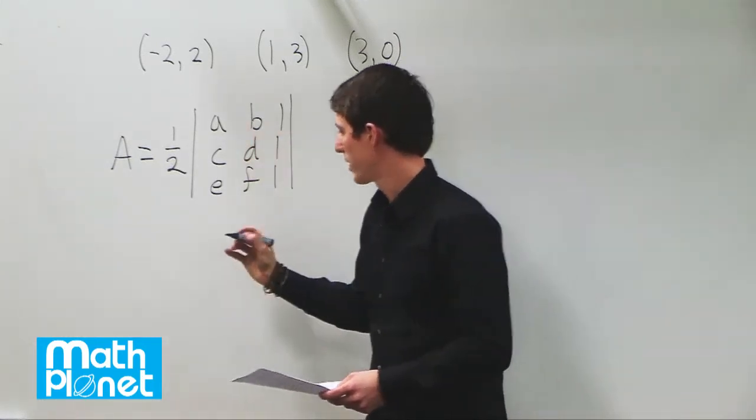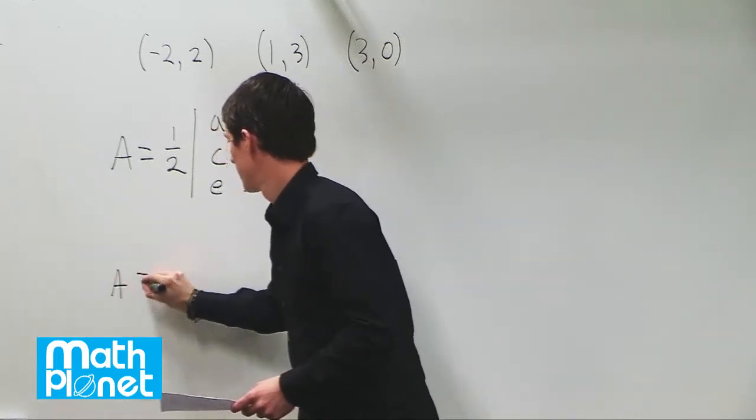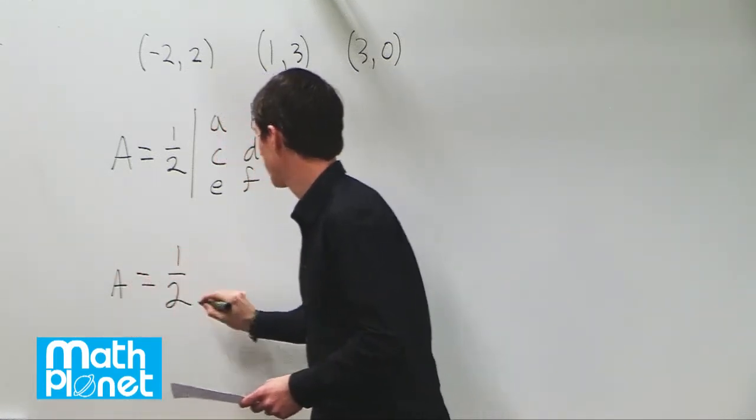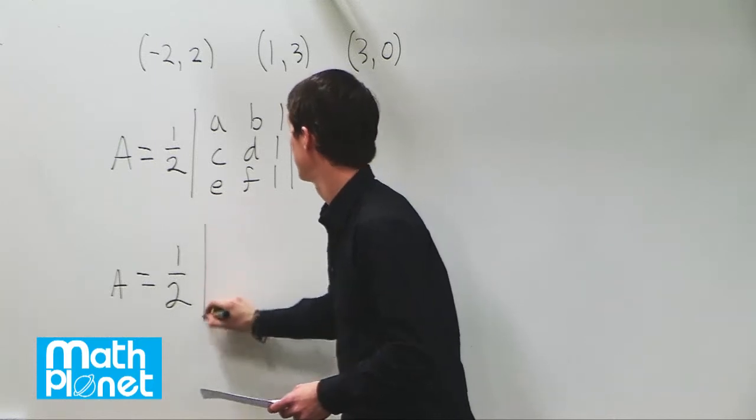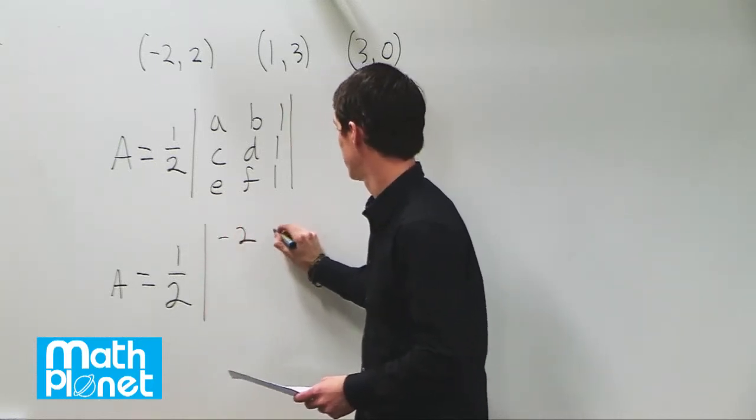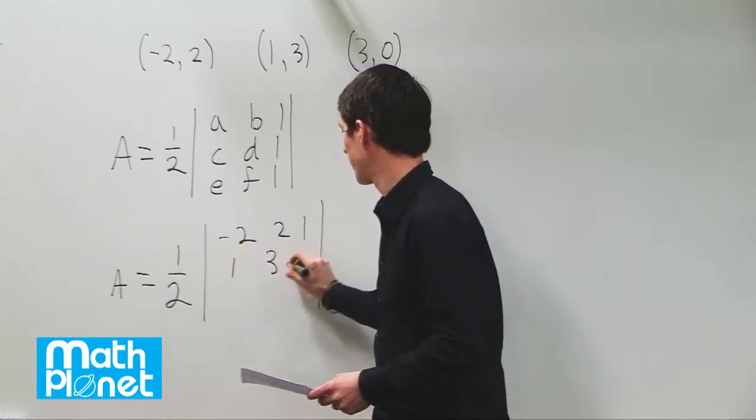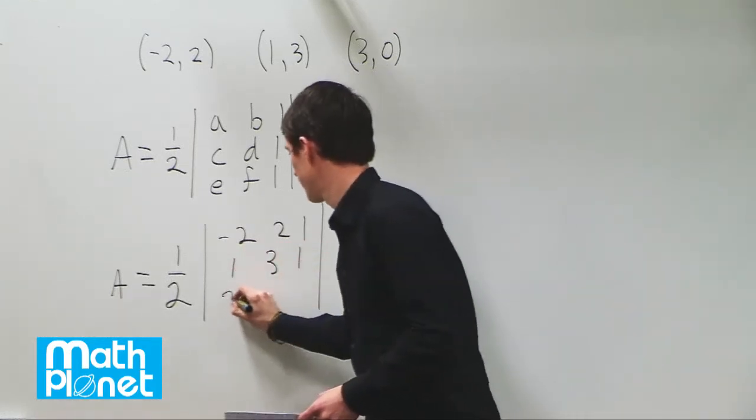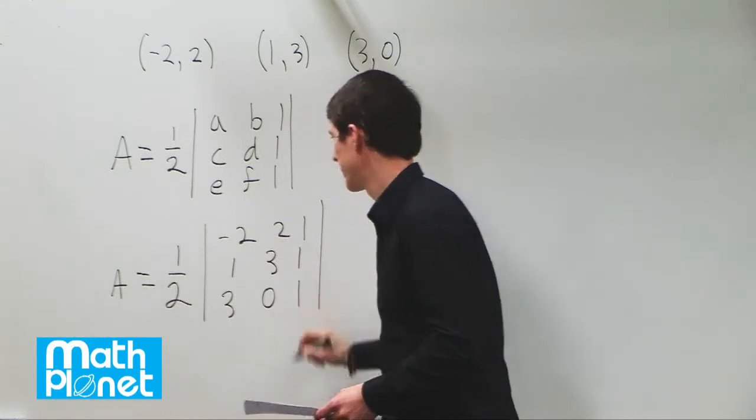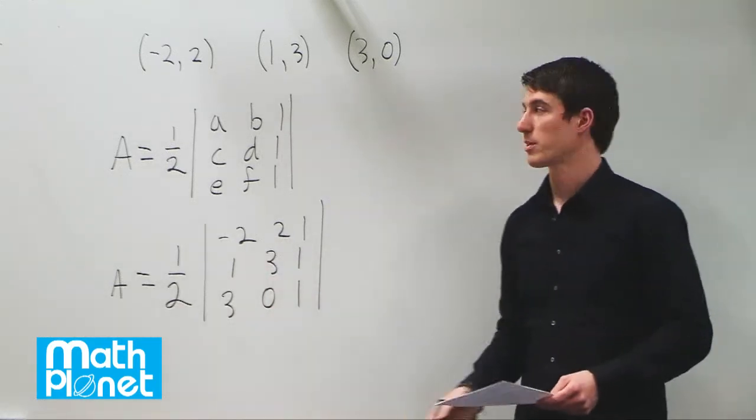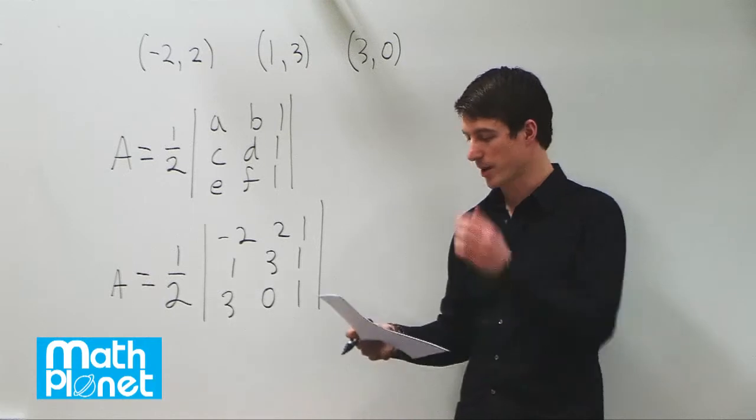So we need to plug these values in and then find the determinant of this third order matrix. If we plug those in, then we get area equals 1 half, negative 2, 2, 1, 1, 3, 1, and 3, 0, 1. So now we can find the determinant of this and that's what our final answer is going to be for the area.